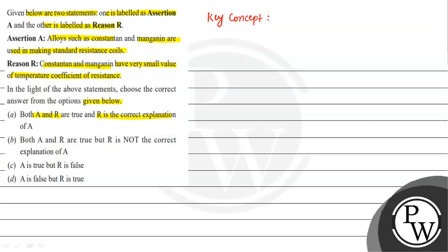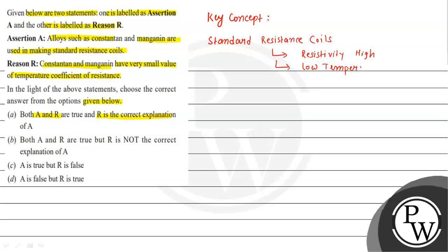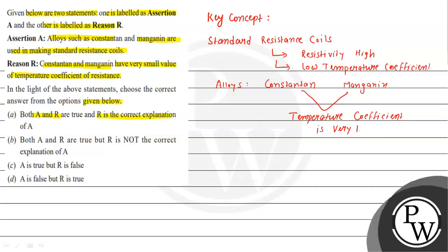The key concept we will use here to solve this question: standard resistance coils have a low temperature coefficient of resistance. Constantan and manganin both have a low temperature coefficient of resistance, and they are used to make standard resistance coils. So both the assertion and the reason are true, and R is the correct explanation of A.